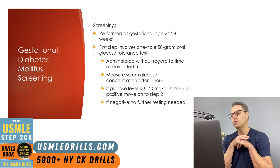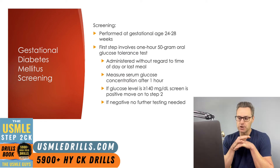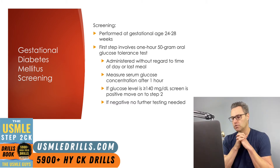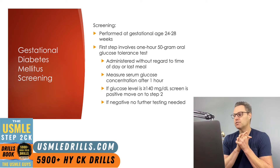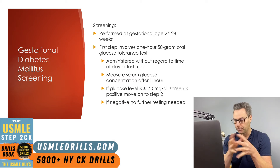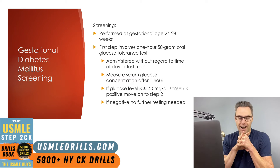Screening for gestational diabetes is performed between 24 and 28 weeks. The first step involves a one-hour, 50-gram oral glucose tolerance test. For this test, there is no need to fast. The patient is given 50 grams of oral glucose, and then one hour later, the serum glucose concentration is measured. The most common cutoff for a positive screening is when the patient's glucose concentration is greater than or equal to 140. However, some institutions will lower that threshold to 135 or even 130, especially if the patient has many risk factors — with the understanding that more false positives will be present.